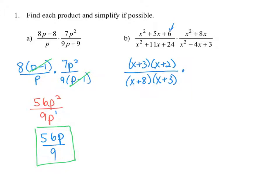We're going to multiply that by the next rational expression, factoring out a GCF of x in the numerator, leaving us with x plus 8. And in the denominator, the trinomial can be factored into x minus 3 and x minus 1. Now we can look to see if there are any common factors in the numerator and denominator to simplify. The x plus 3 in the numerator simplifies with x plus 3 in the denominator, and x plus 8 in the numerator simplifies with x plus 8 in the denominator.